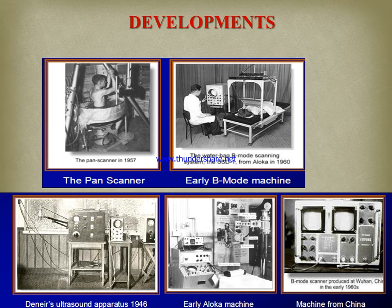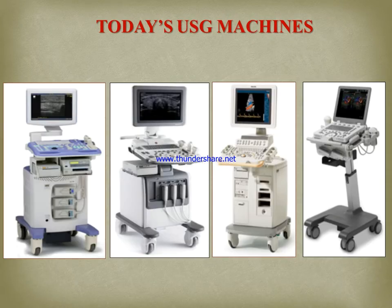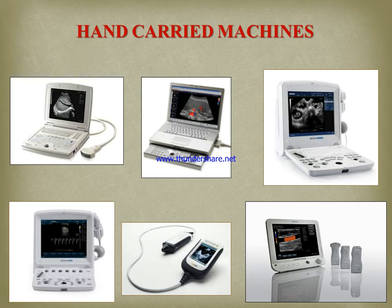Now we see the development of ultrasound machines. These are the pan-scanners and early B-mode machines. Operators in 1946, early machines from China. Today's ultrasound machines show many more advancements in technology, including handheld machines and hand-carried machines of different categories. These portable machines represent the most advanced current designs.